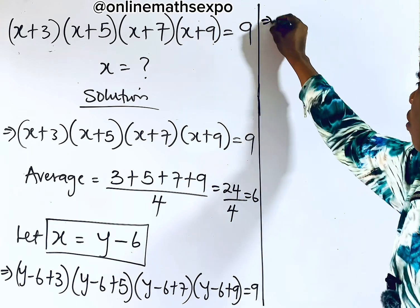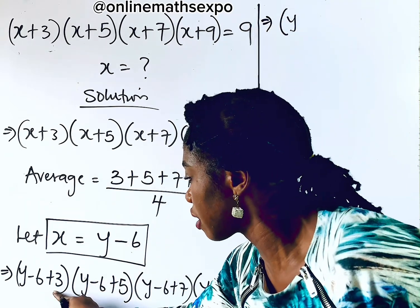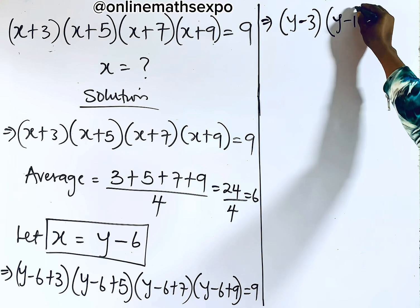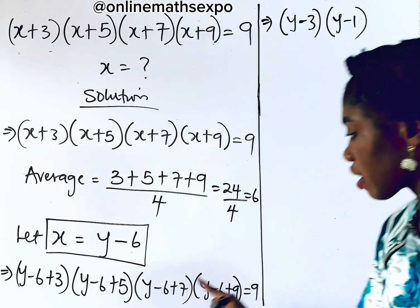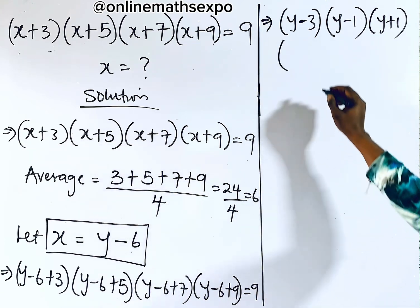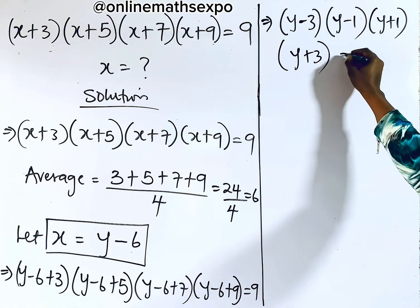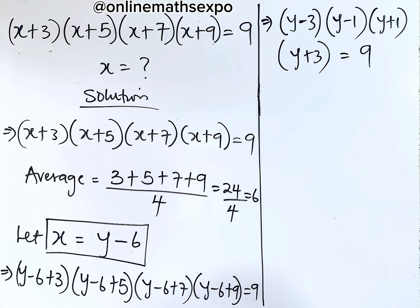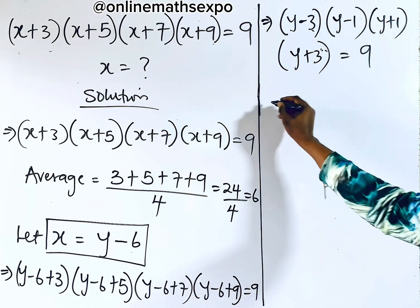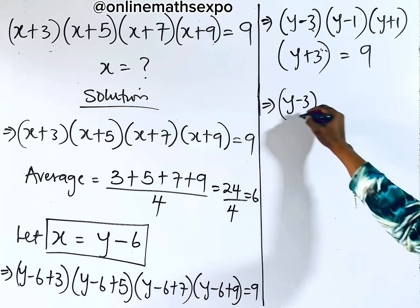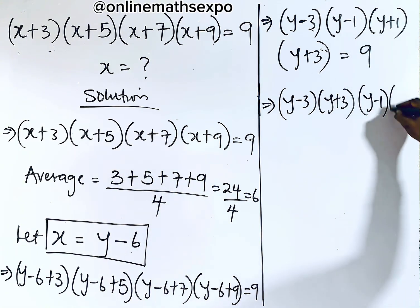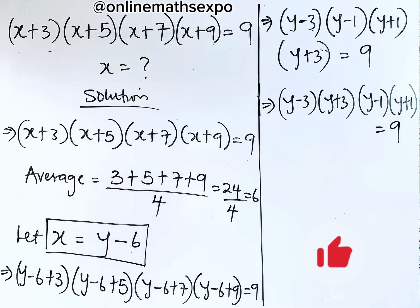Simplifying this, we now have: y − 3, into y − 1, into y + 1, into y + 3, everything equal to 9. What did you observe? You can bring (y − 3)(y + 3) together, and (y − 1)(y + 1) together. So if you do that, you have (y − 3)(y + 3) into (y − 1)(y + 1), everything equal to 9.